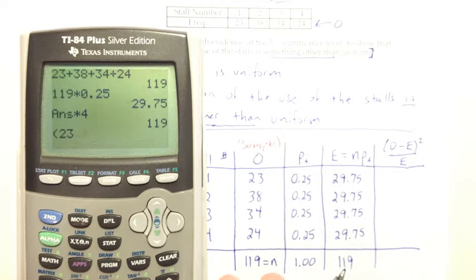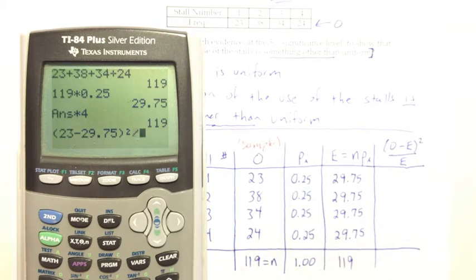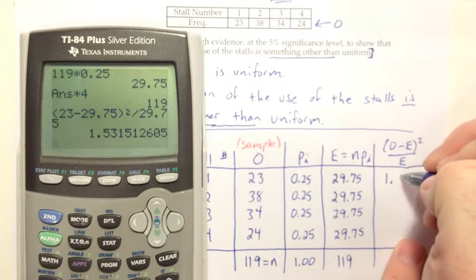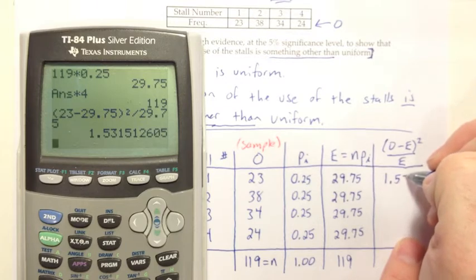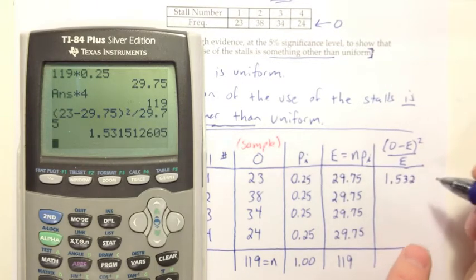So we do the O, 23, minus the expected. We square that. And then we divide that by what we expected, 29.75. And it makes sense that I wasn't really sure which way to go on that, whether that was a big difference or not. Because when we do the mini test statistic, we get something in the gray area, 1.532. Over 2, we would have said that's a big difference. Smaller than 1, we would have said no. And this is kind of right in the middle.